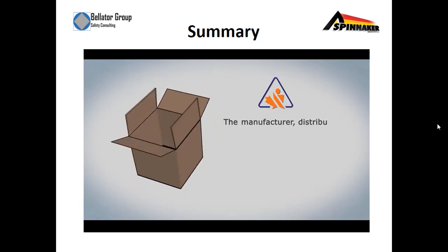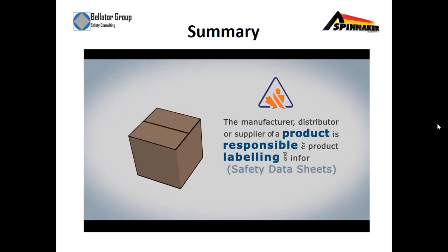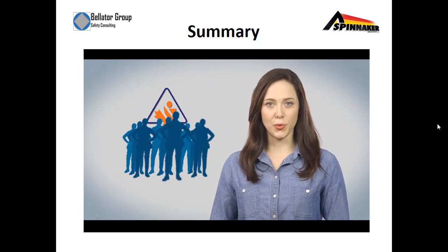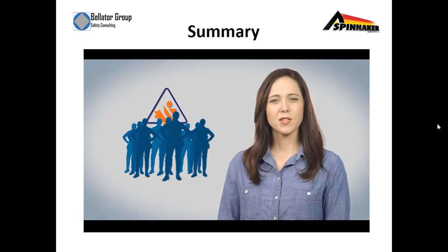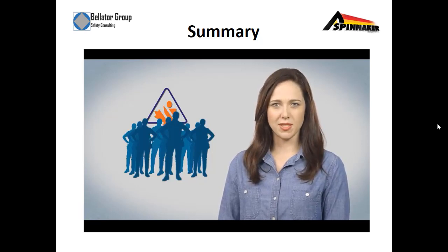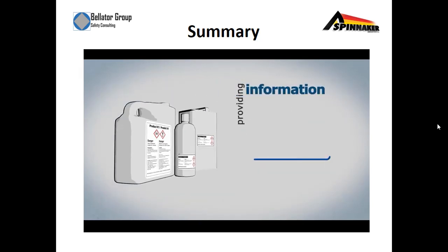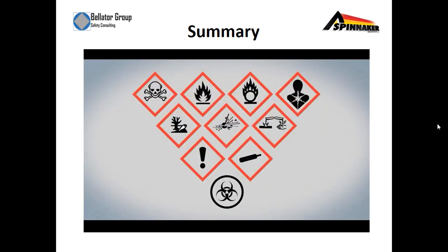The manufacturer, distributor, or supplier of a product is responsible for product labeling and information. Your employer is responsible for educating you on the safe handling of hazardous products you use. Each hazardous product must have a label with symbols and hazard statements, providing information about the type of hazard associated with the product. There are 10 WHMIS symbols, and you need to look for them and recognize the dangers they represent.